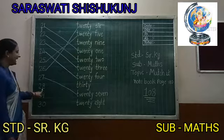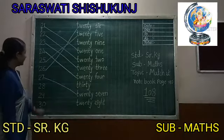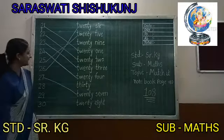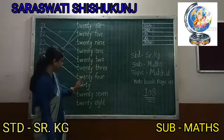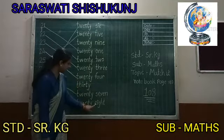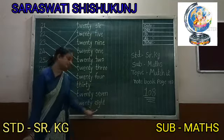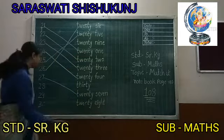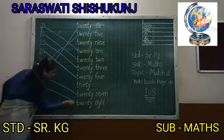Now 28. T, W, E, N, T, Y — Twenty. E, I, G, H, T — 8. Twenty Eight, 28. Let's match it.